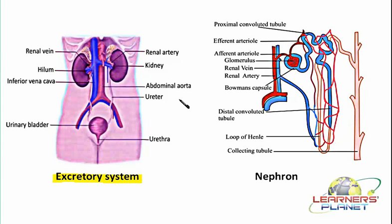Here is the picture showing the different parts of the excretory system. The very first part is the kidney — a bean-shaped structure located in the upper abdominal cavity towards the dorsal side. The two kidneys are present in a pair, and each kidney is not exactly at the same level. The left kidney is slightly above the right kidney.